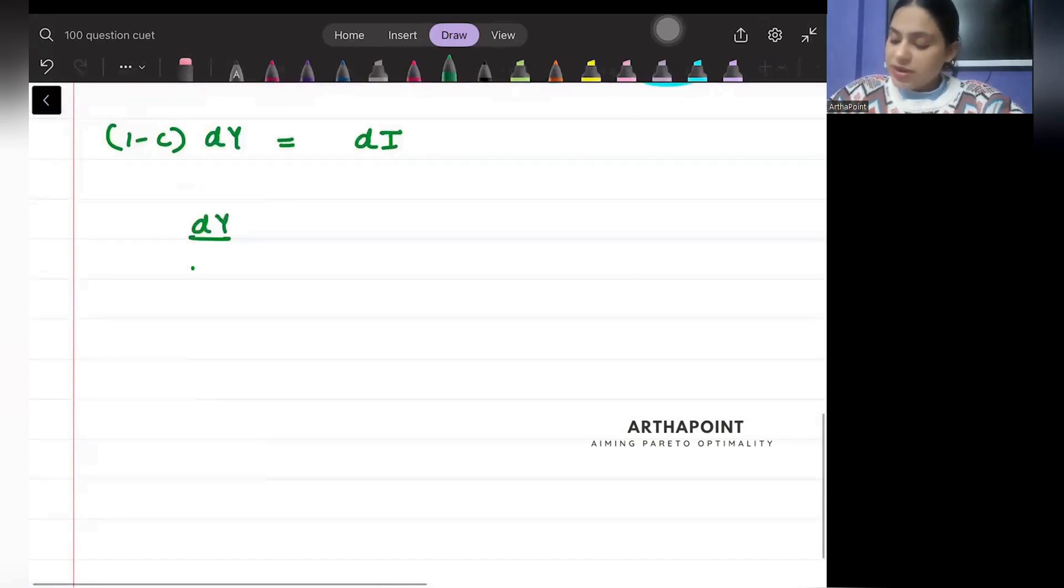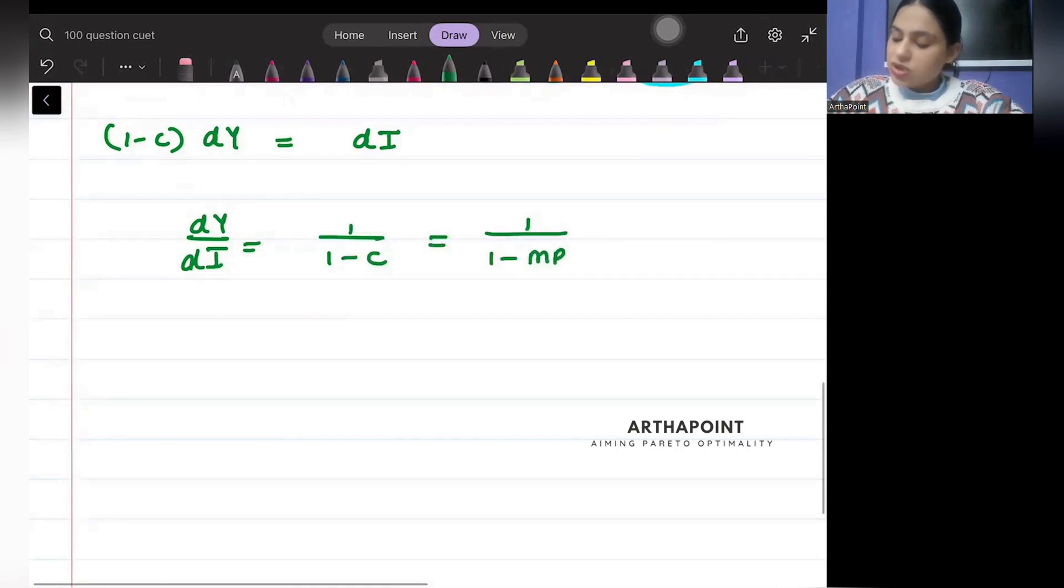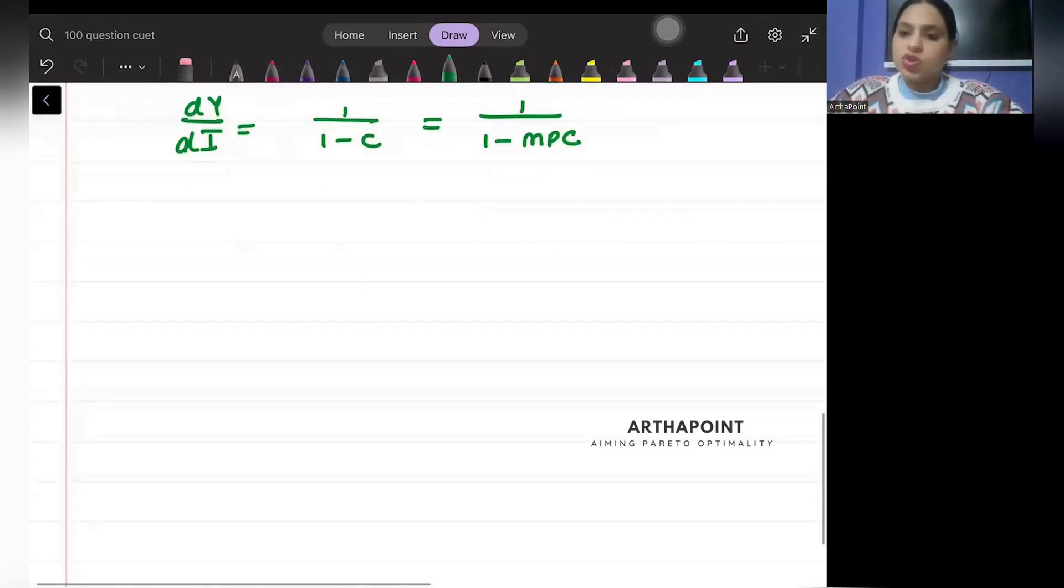So dY/dI will give me 1/(1 - c). That means 1/(1 - marginal propensity to consume).